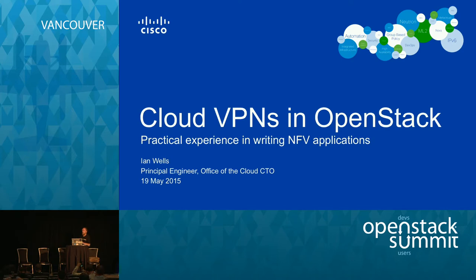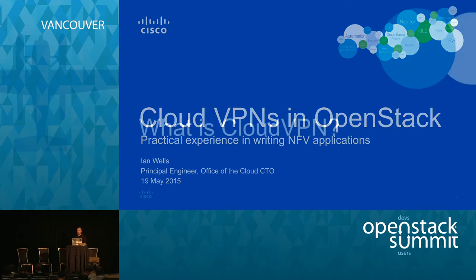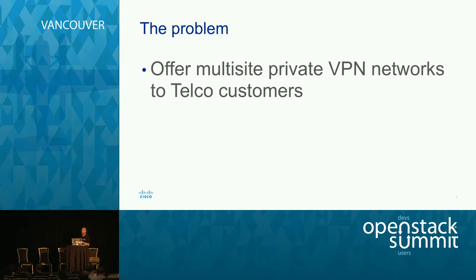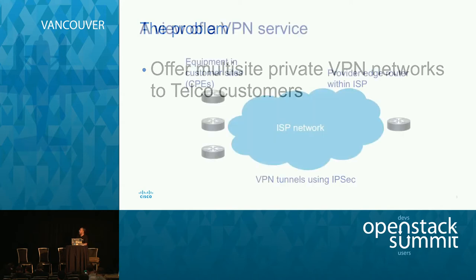The journey of trying to write NFV-based applications on an OpenStack cloud — so just to give you some background on what we actually did. The first question is: what is cloud VPN and what were we trying to accomplish? In this case, we were trying to offer multi-site private VPN networks to customers of internet service providers. For instance, McDonald's — you've got many sites and you'd like to have your own VPN that covers all of them, so you buy or rent a service from your ISP.